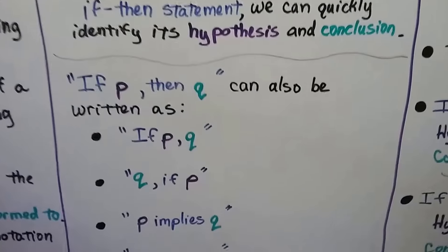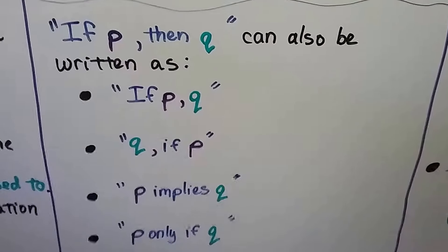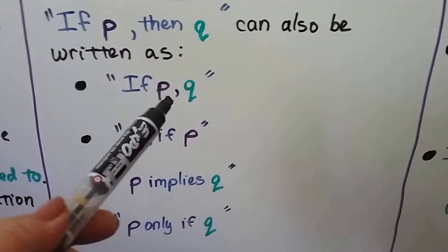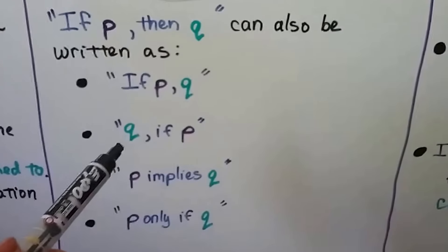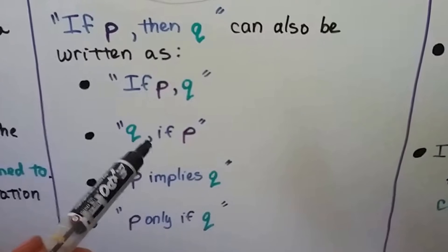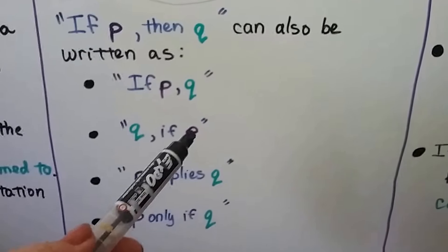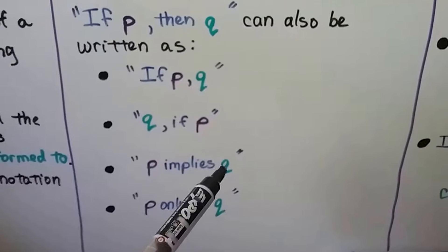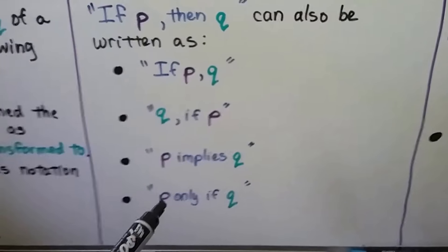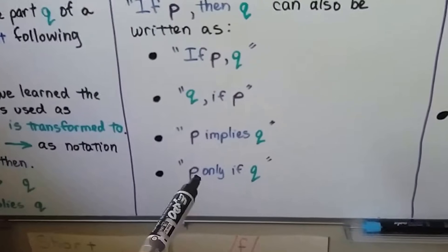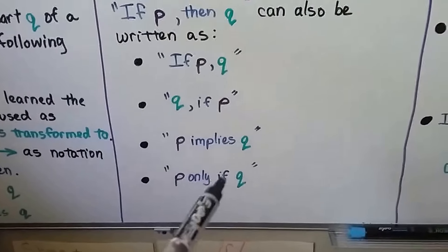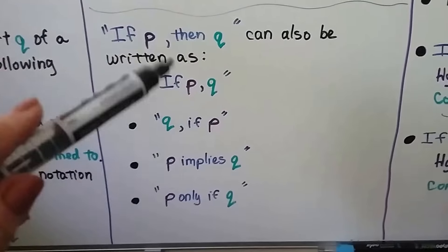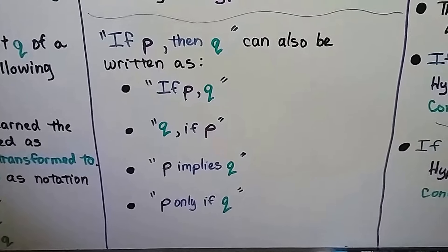If p, then q can also be written as 'if p, q,' or 'q, if p,' or 'p implies q,' or 'p only if q.' There are a lot of different ways that we can write it.